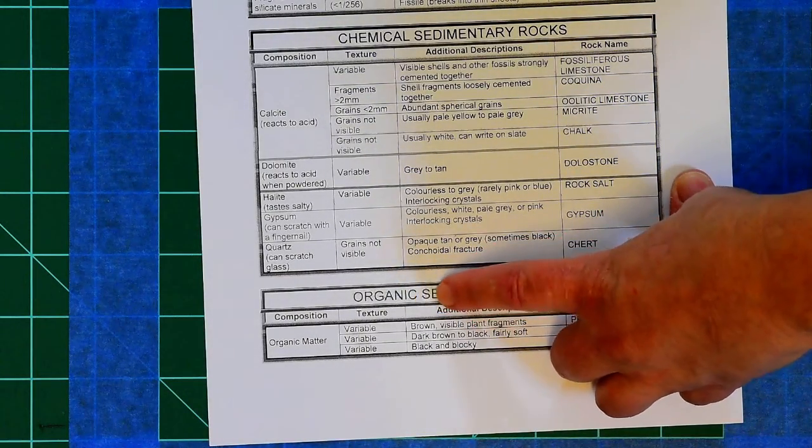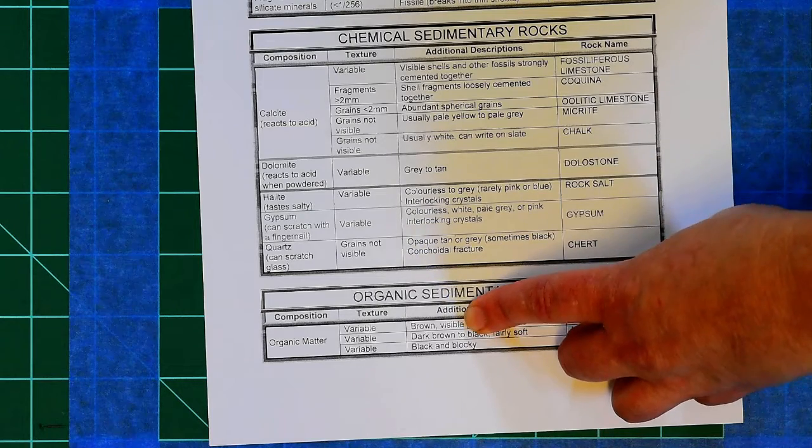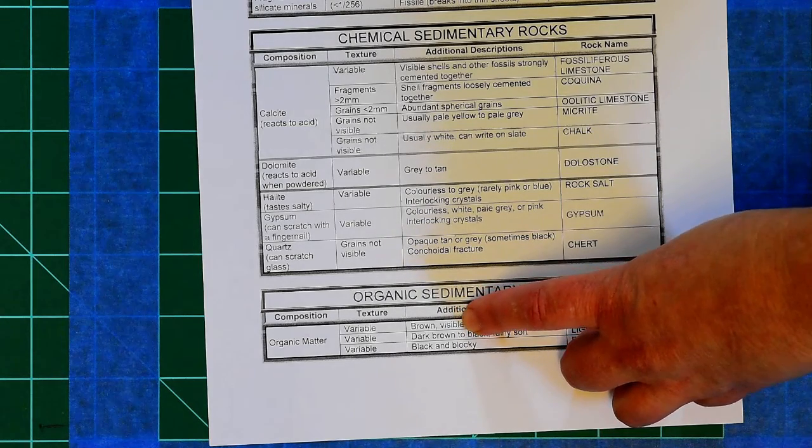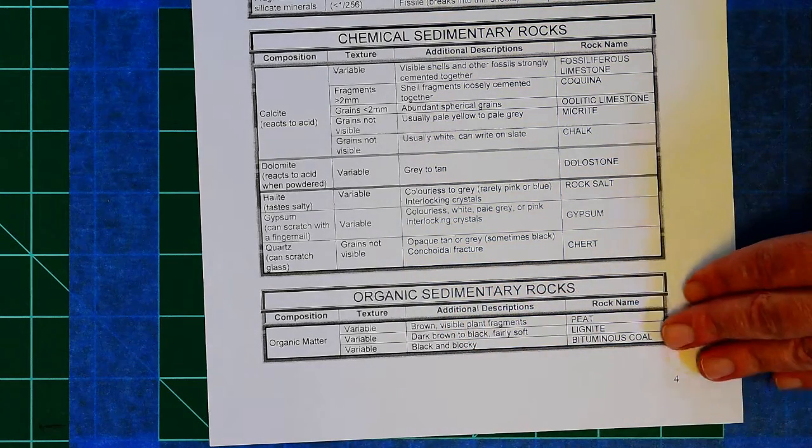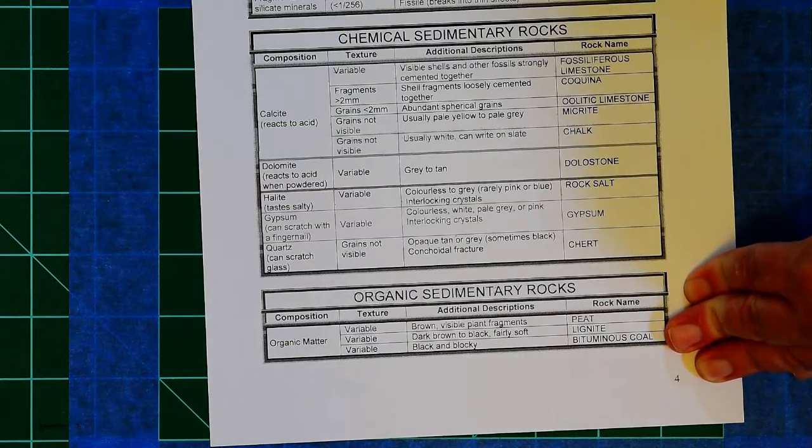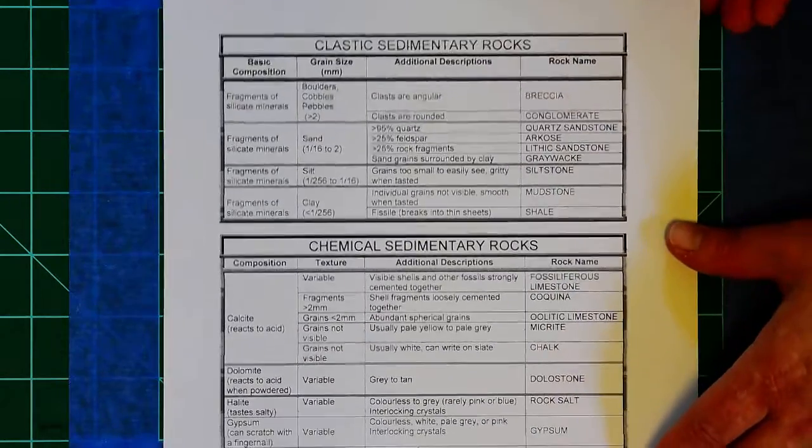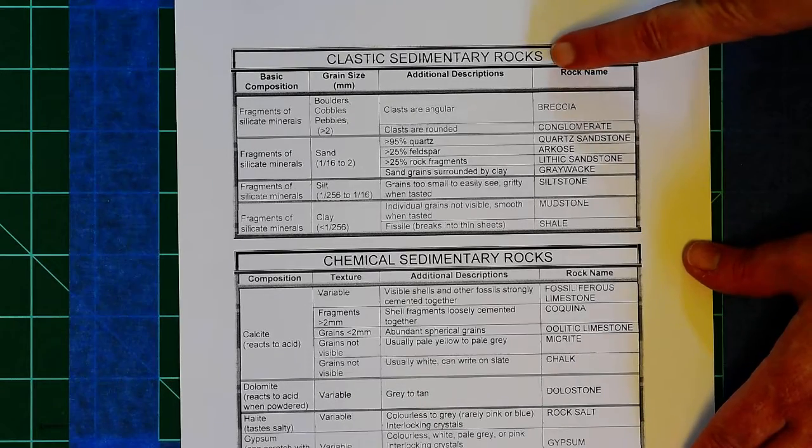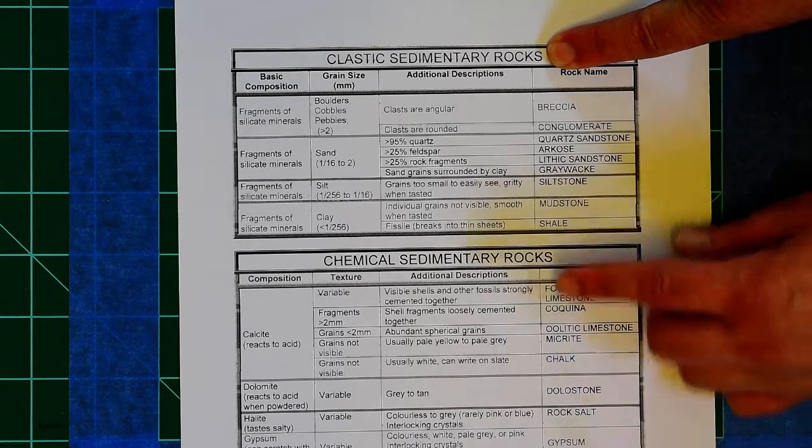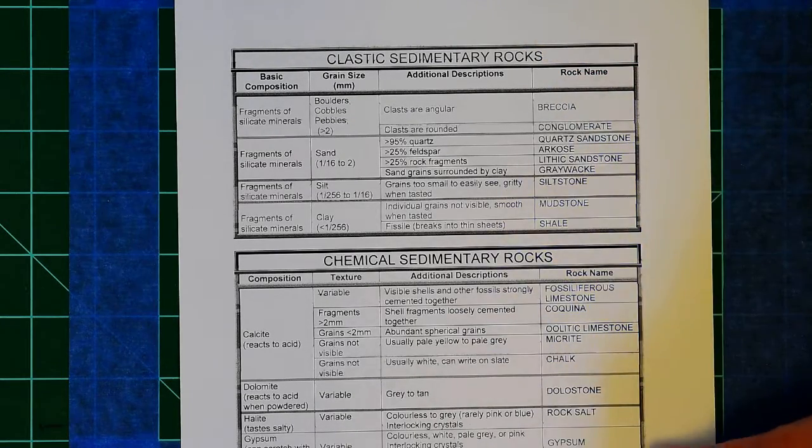Now I will let you know we're not going to look at any organic sedimentary rocks in this class, at least not in this lab. Those are all different types of coal. So in this lab you are going to have to figure out: are you looking at a clastic sediment or a chemical sedimentary rock?